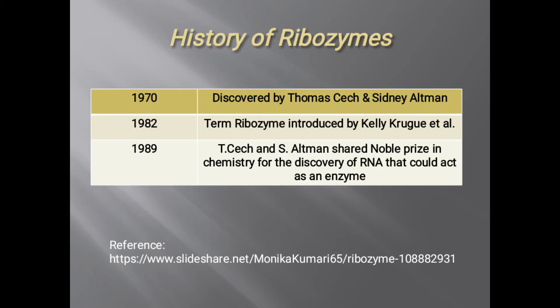Now the history of ribozymes. Ribozymes were discovered by Thomas Cech and Sidney Altman in 1970. The term ribozyme was first introduced by Kelly Kruger et al. in 1982. In 1989, Thomas Cech and Sidney Altman shared the Nobel Prize in Chemistry for the discovery of RNA that could act as an enzyme.